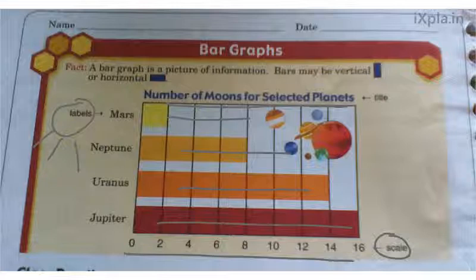Question 1c asks how many moons does Neptune have. You look at Neptune — the bar comes all the way out to right there, and if you go down you can see Neptune has eight moons.